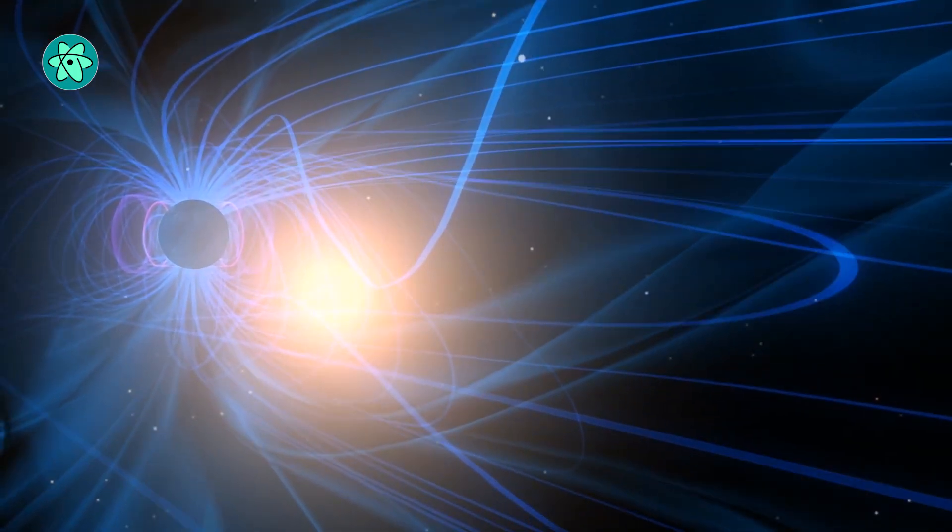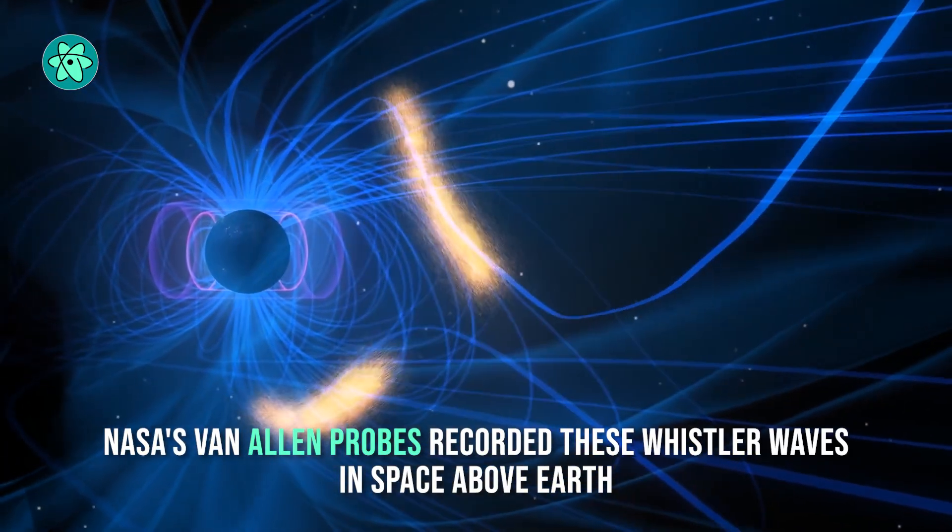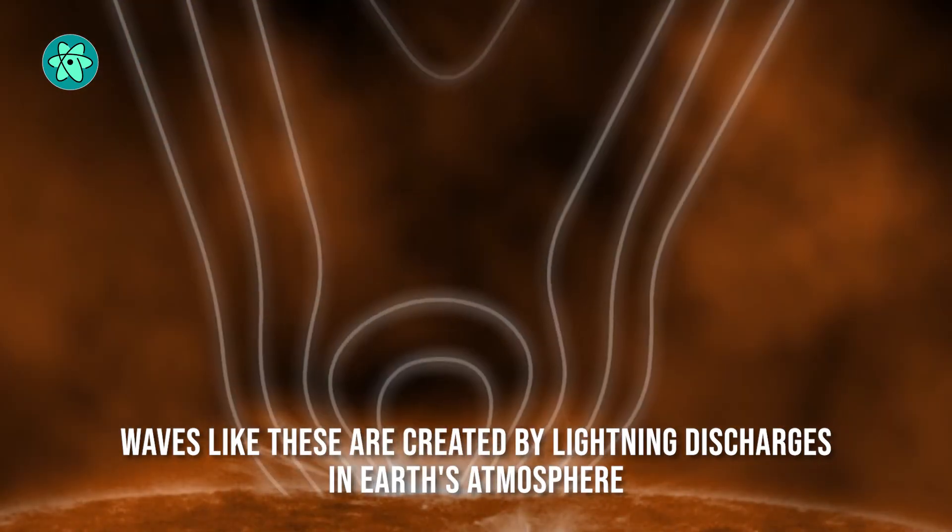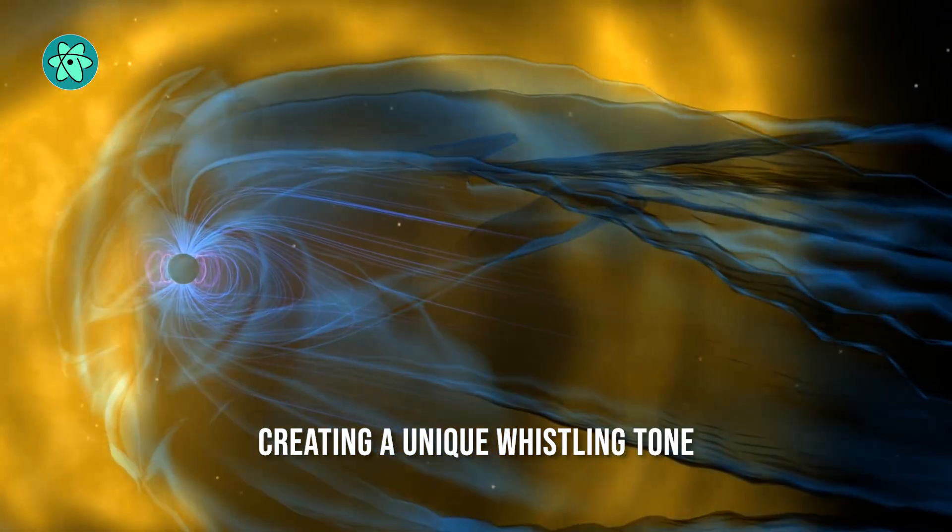In 2017, NASA's Van Allen probes recorded these Whistler waves in space above Earth. Waves like these are created by lightning discharges in Earth's atmosphere creating a unique whistling tone.